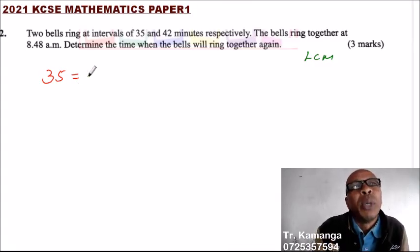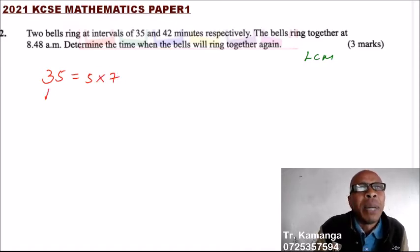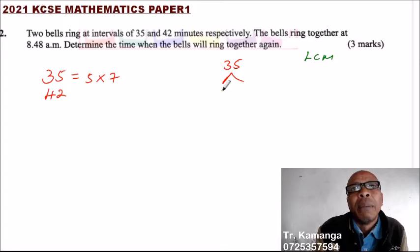For example, the factors of 35, these are numbers which when you multiply you get 35. We get, this is 5 multiplied by 7. You get 35. What about 42? You can also get the factors by using this method. By 5 you get 7.